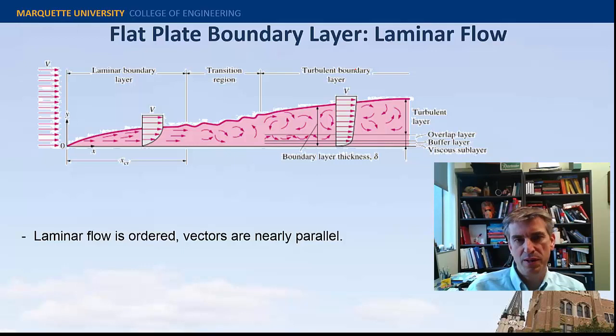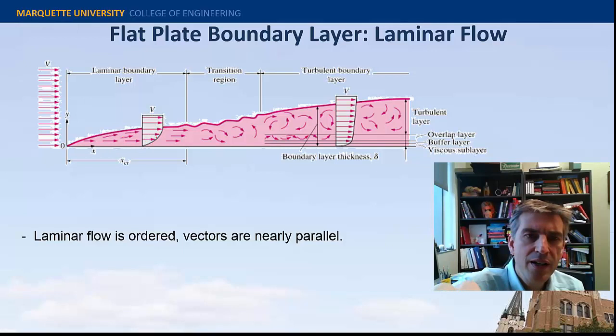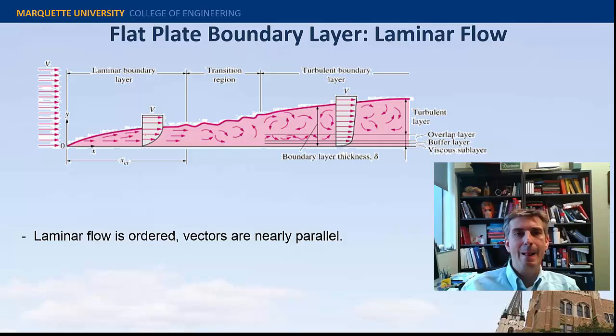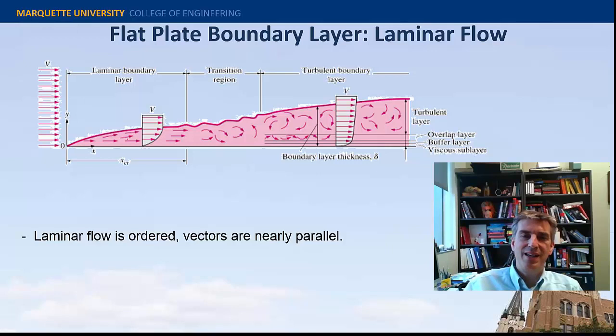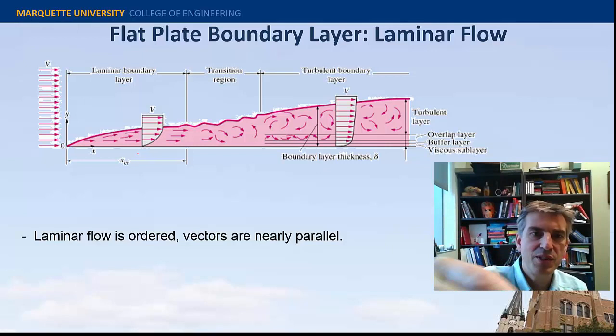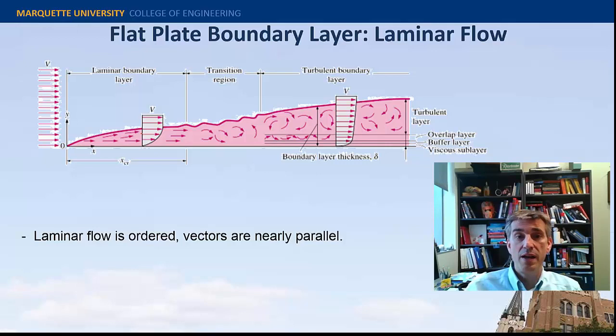Here's a flat plate with more detail showing the laminar, turbulent, and transition regions. The vectors within the laminar boundary layer are often drawn parallel as an assumption, but in fact they are not perfectly parallel to the plate. There has to be some upward motion of the fluid — because fluid is always at rest at the plate, it must flow upward slightly in order to conserve mass to accommodate the continuously decreasing streamwise flow. That upward flow is what causes the boundary layer to grow.